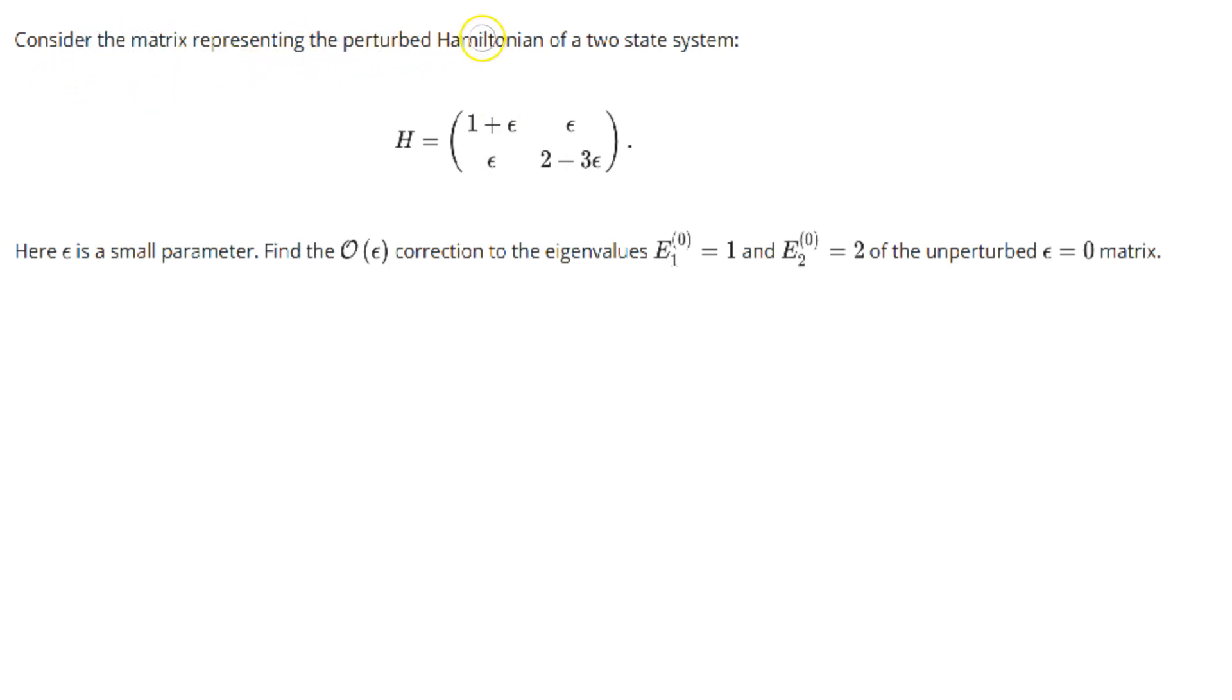Consider the matrix representing the perturbed Hamiltonian of a two-state system. Immediately I see that epsilon is our parameter. It's kind of like our lambda, and we want it to be small. It's small here, and they even say epsilon is a small parameter.